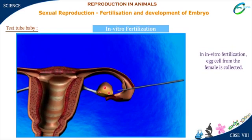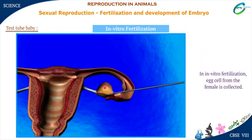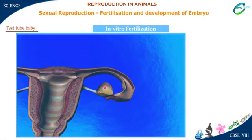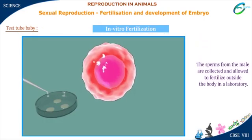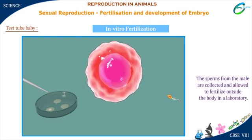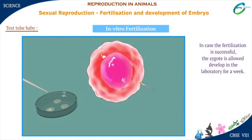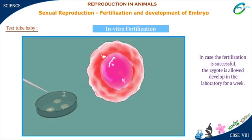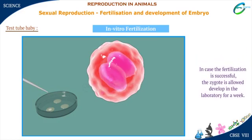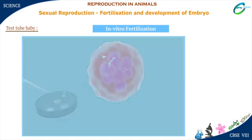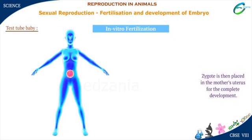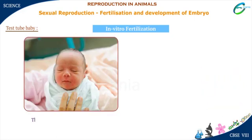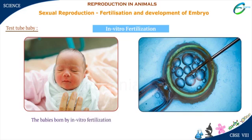In in vitro fertilization, the egg cell from the female is collected first. The sperms from the male are collected and allowed to fertilize outside the body in a laboratory. In case the fertilization is successful, the zygote is allowed to develop in the laboratory for a week. Then the zygote is placed in the mother's uterus for complete development. The babies born by in vitro fertilization are called test tube babies.